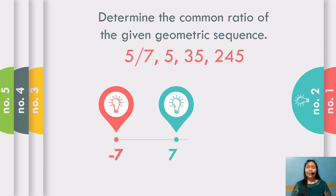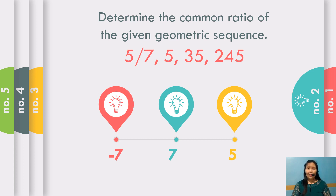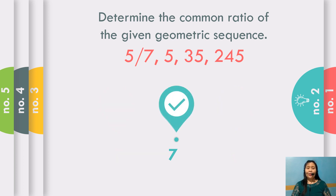How about number two? Determine the common ratio of the given geometric sequence 5 over 7, 5, 35, and 245. What do you think is the common ratio? Correct. The answer is equal to 7, because 35 divided by 5 is 7. 245 divided by 35 is also equal to 7. Or 5 all over 5 over 7 is also equal to 7.